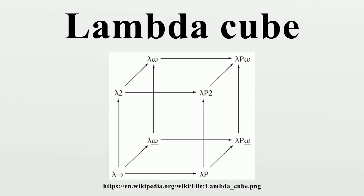In mathematical logic and type theory, the lambda cube is a framework for exploring the axis of refinement in Coquand's calculus of constructions. Starting from the simply typed lambda calculus as the vertex of a cube placed at the origin, and the calculus of constructions as its diametrically opposite vertex, each axis of the cube represents a new form of abstraction.